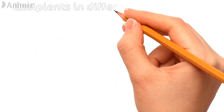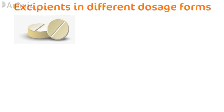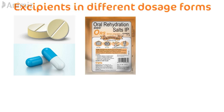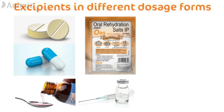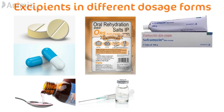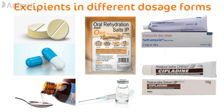Now let's see the main excipients used in different types of dosage forms: tablet, capsule, dried powder or granules in sachet form, syrups as liquid dosage forms, injectable dosage forms, creams, and ointments.